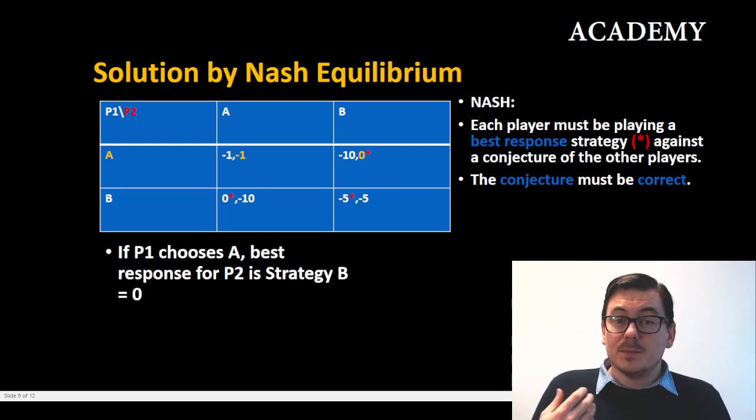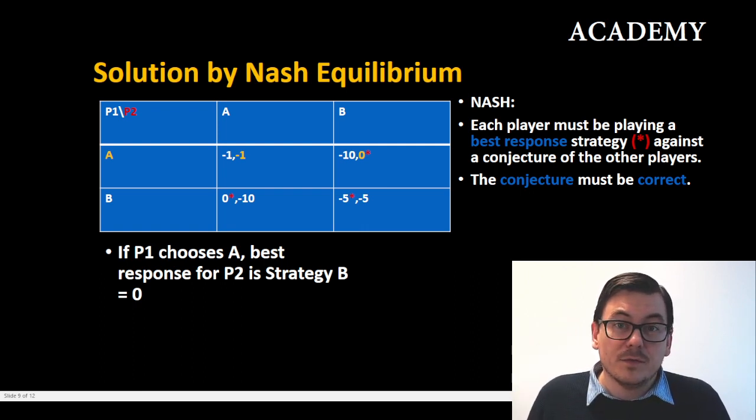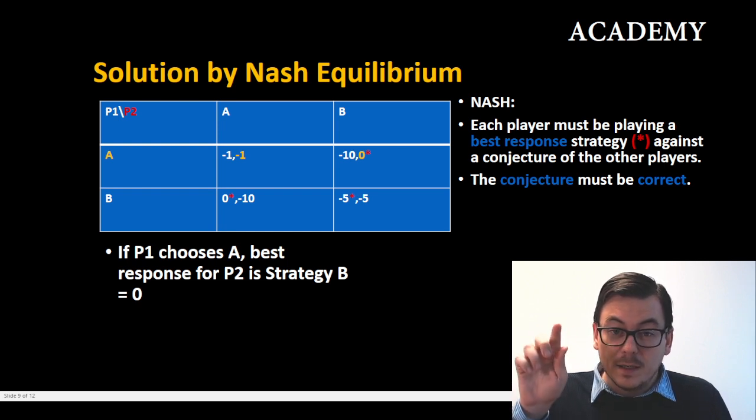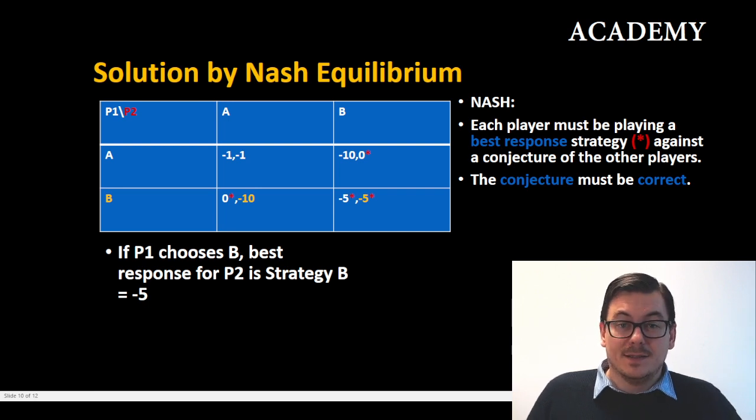So the best response for player two in this case is playing strategy B, marked by the payoff with the zero with a red star. So let's look at the last segment.